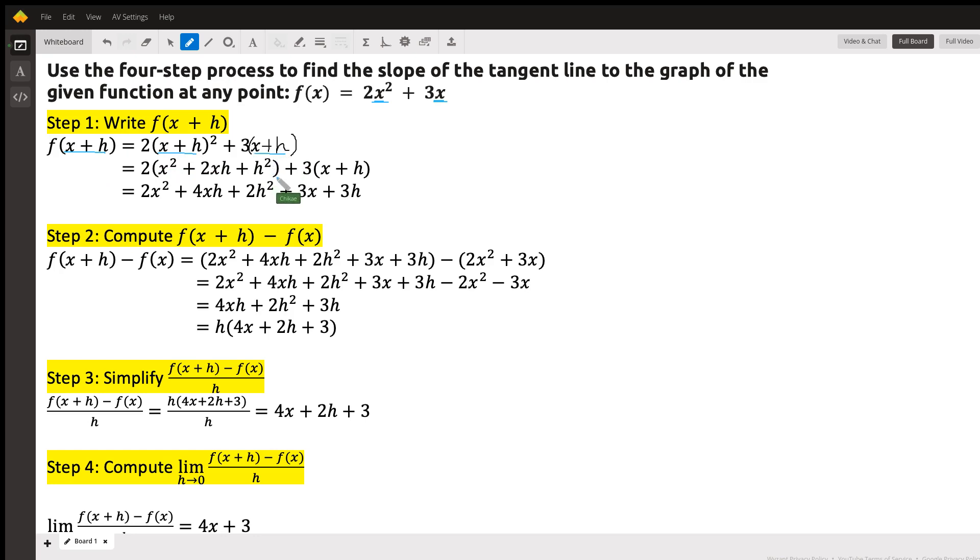Now I'm going to expand the binomial (x + h)². That gives us x² + 2xh + h² + 3(x + h). And then of course, we can distribute in both of the parentheses. We can distribute that 2 here to every term in the first parentheses, and we're going to distribute the 3 to every term in the second parentheses. And then so our final expression for f(x + h) is going to be 2x² + 4xh + 2h² + 3x + 3h.